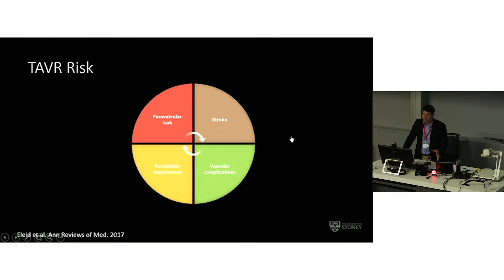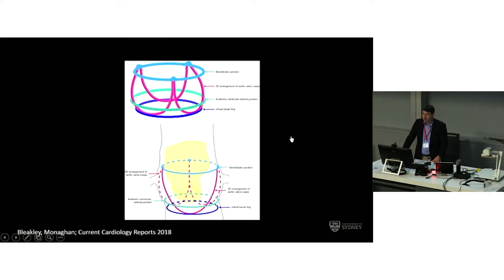There are risks not just within the heart, but also stroke, pacemaker requirements, and vascular complications that we need to try to reduce — and sometimes these risks can all be interrelated. A lot of what we're trying to establish is about the annulus: this virtual basal ring uniting the hinge points in a single plane. Measuring that ring and annular structure, as well as other elements, is really key.